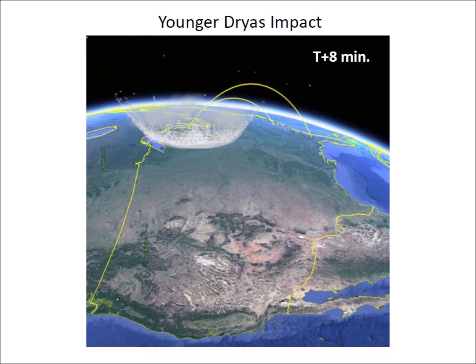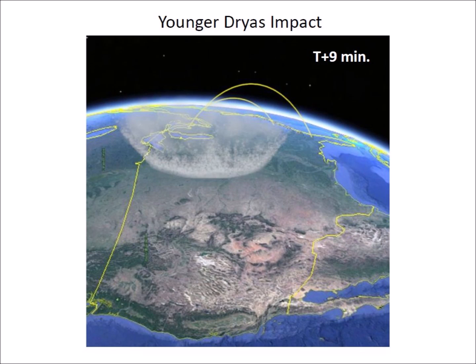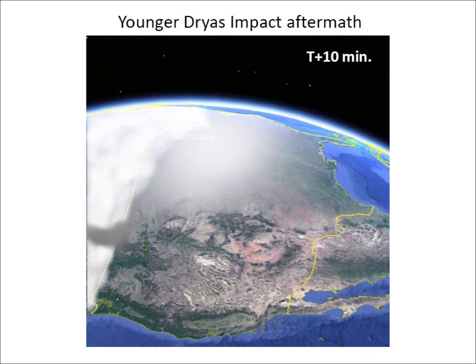The slower ice boulders traveled for 6 minutes before hitting the surface. Ice boulders with greater speed and higher trajectory had flight times of about 9 minutes. All of the ice bombardment happened within 10 minutes.